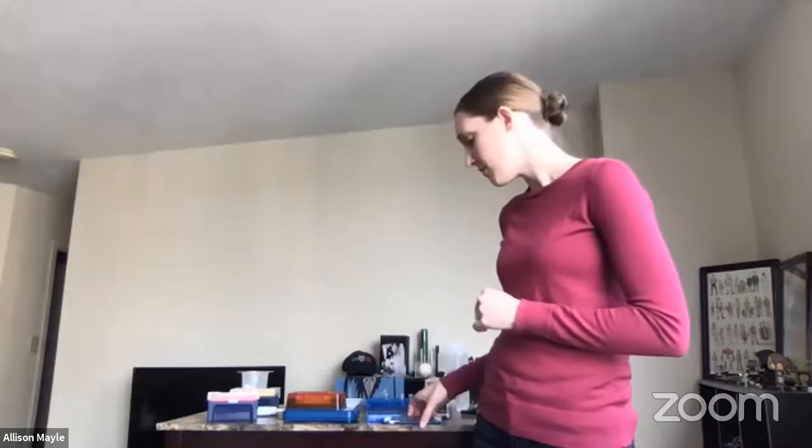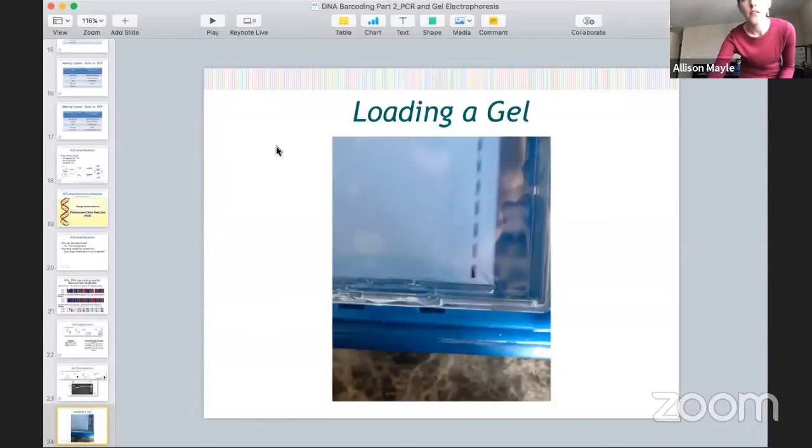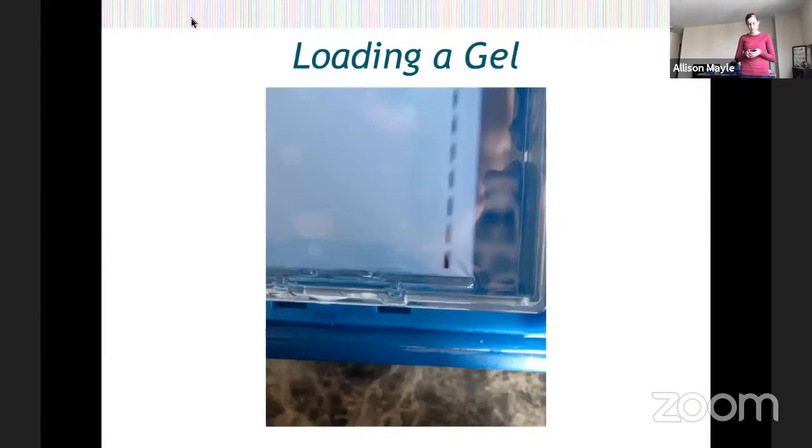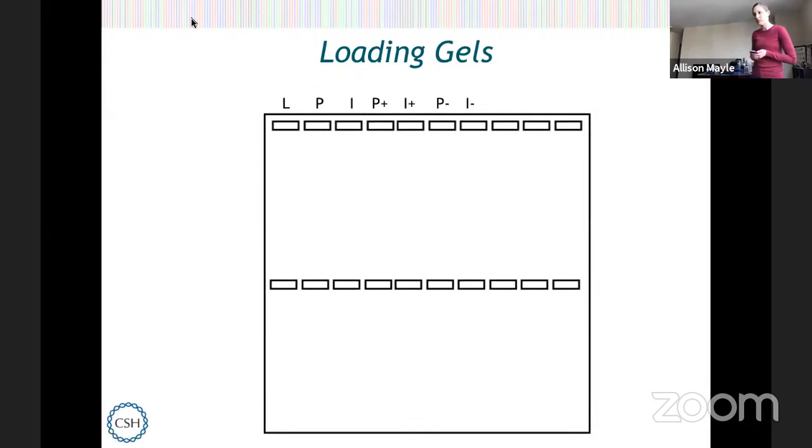We're going to separate our DNA by size, and this is going to help us determine whether, when we made copies of DNA by PCR, those copies are the right size — whether we think we actually copied a barcode. Something very important when loading gels is you should always have a map for yourself of where you put your samples. In science, we want to keep a good lab notebook and track of what we're doing. I can't tell you how many times I've thought I'm going to remember this, and then 10 minutes later totally forgot.